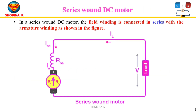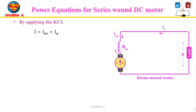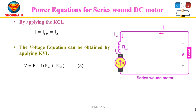In the series DC motor, the field winding is connected in series with the armature winding. The series field current is given as I = ISE = IA. Applying Kirchhoff's current law: I is the input line current, ISE is the series field current, and IA is the armature current. The voltage equation, obtained by applying Kirchhoff's voltage law, is: V = E + I·(RA + RSE), where V is supply voltage, E is back EMF, I is current, RSE is series field winding resistance, and RA is armature resistance.